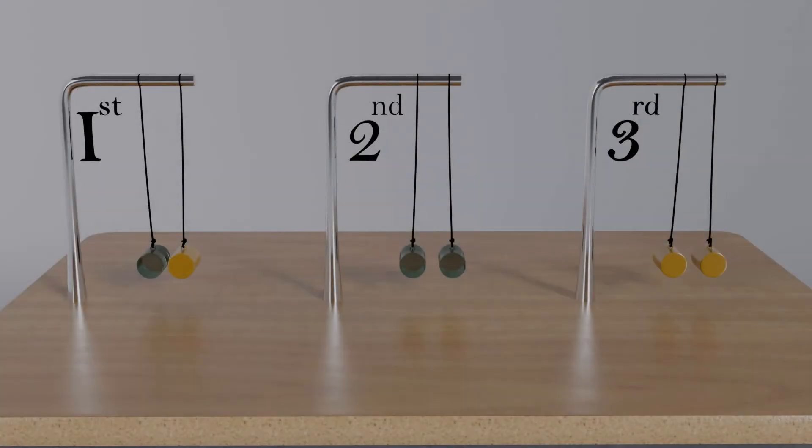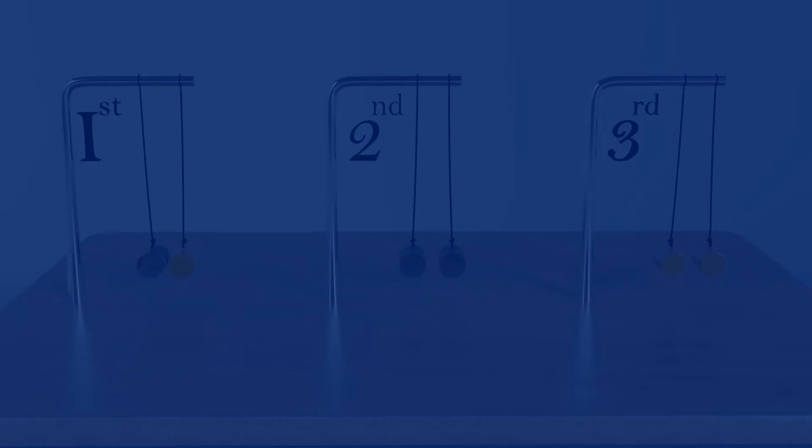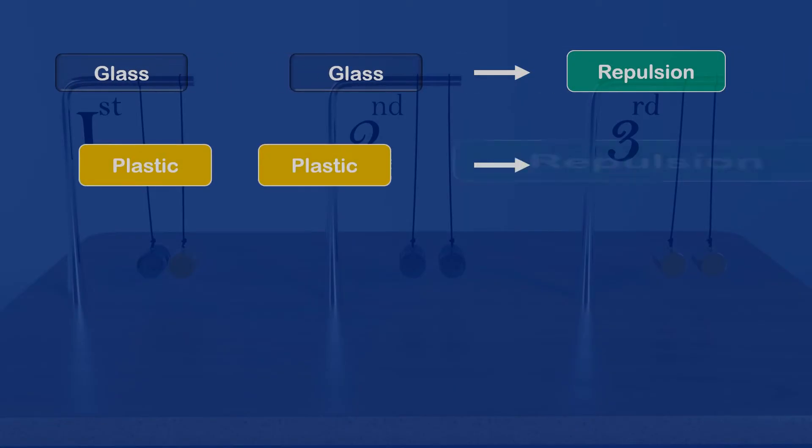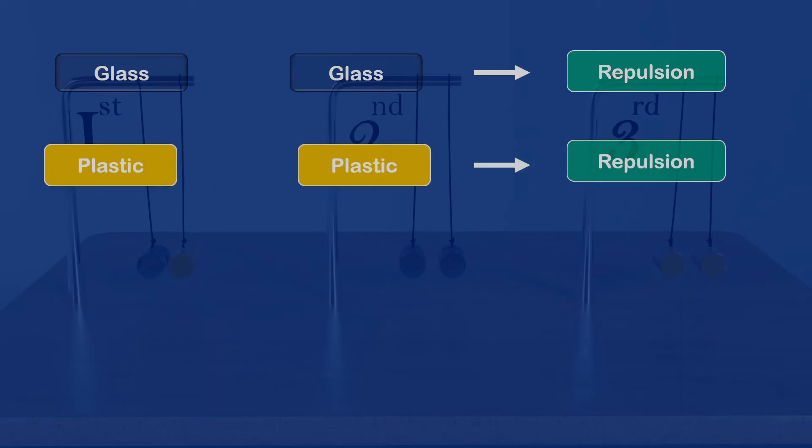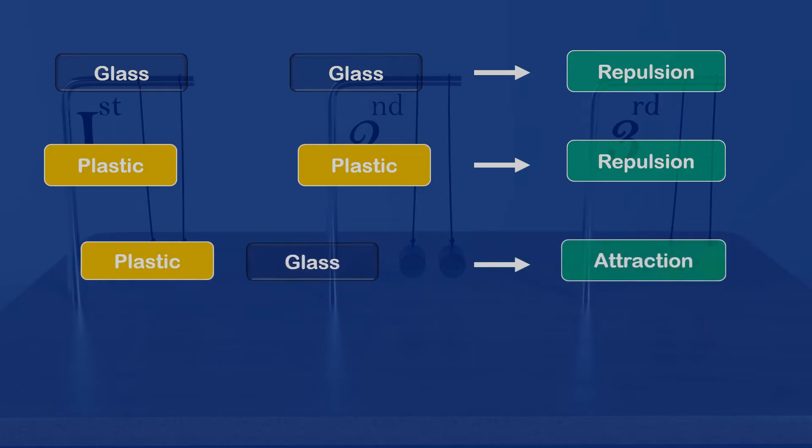In the experiment, we observed that, when a glass rod and a plastic rod were rubbed with a silk cloth, the same kind of rod like glass and glass repel each other and just like that, force of repulsion was observed between plastic rods. In contrast, the plastic rod and glass rods attracted each other. From this behavior of charged bodies, it is concluded that there will be two types of charges.